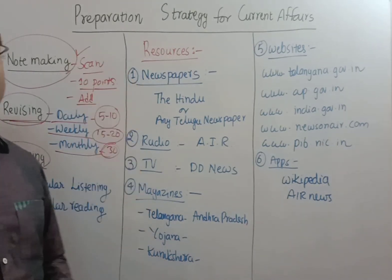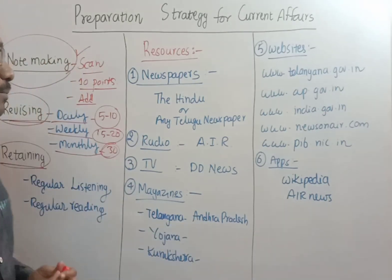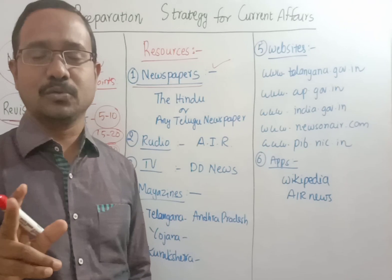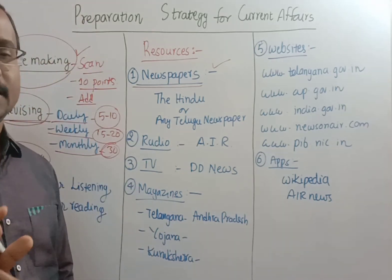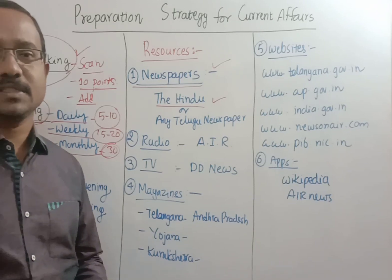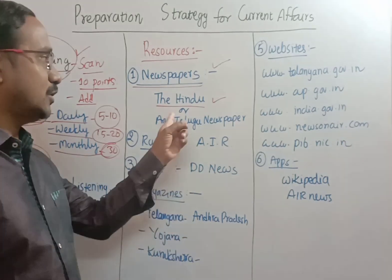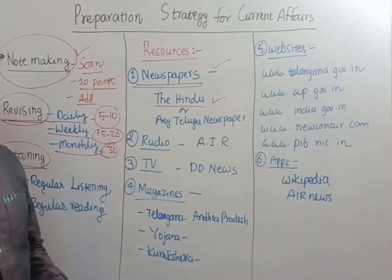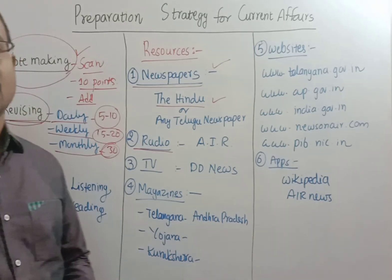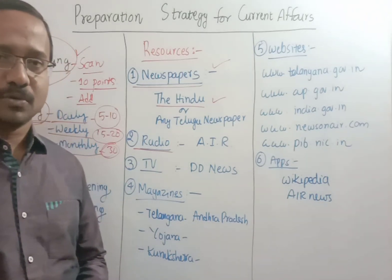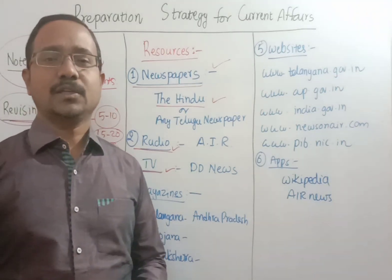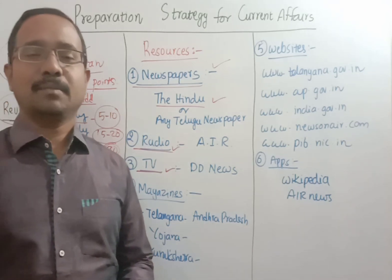Now we will look at the resources from which we can collect current affairs. The first and best resource is the newspaper — every competitive aspirant must get accustomed to studying a daily newspaper, whether in English or Telugu. English medium students aspiring for civil services or group examinations must study The Hindu or any local newspaper. Second, if you are using a radio, you must listen to All India Radio news programs and current affairs programs. The third resource is television — I recommend only Doordarshan's English news channel, which has many news bulletins and current affairs programs.